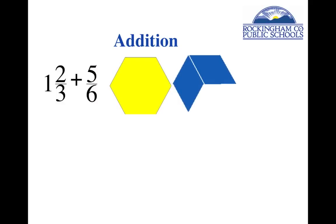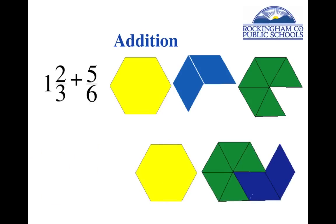Here's another one. One and two thirds plus five sixths. Again, addition just means start with one, put the other with it, see what you got. Now if you move some of those greens around, you can see that I could make this shape. Or that shape. So the answer must be two and a half.